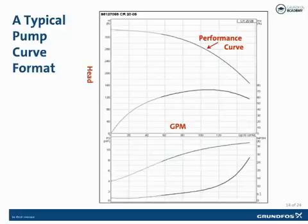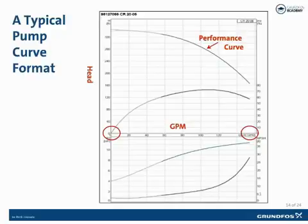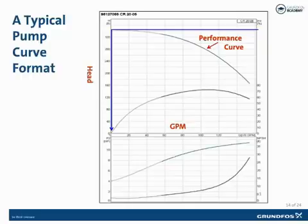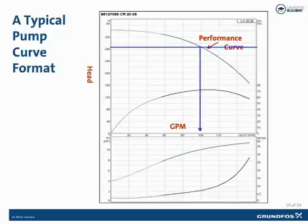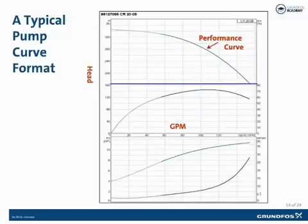The pump listed here can produce anywhere from 0 to just over 150 gallons per minute depending on the system where it's installed. For instance, if this pump were put in a system with 343 feet of head, the pump would produce 0 gallons per minute — this point is also known as shut-off head or deadheading the pump. If put in a system with approximately 290 feet of head, the pump would produce 100 gallons per minute. At approximately 170 feet of head, it would produce its maximum flow of just over 150 gallons per minute — this point is known as run-out, and there is a risk of cavitation when operating pumps at this point.